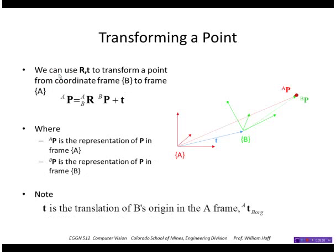We can think of a transformation as transforming a point from one coordinate frame to another, in which case we'll need a rotation and a translation. The translation here, if I'm transforming a point from B representation to A representation, I'm going to add the translation vector, which is the location of B in the A frame. So I'm going to write this as B origin in A.